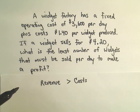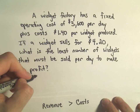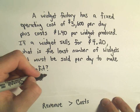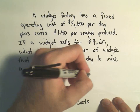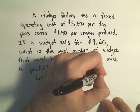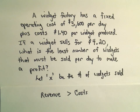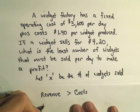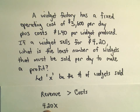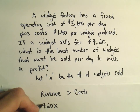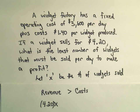Let's think about the revenue. If you're selling these objects, let's let x be the number of widgets sold. Since we're selling them for $4.20 each, your revenue would be $4.20 times x. You just multiply the price you earn — we get $4.20 for each one — multiply that by the number sold, and that gives us our revenue.